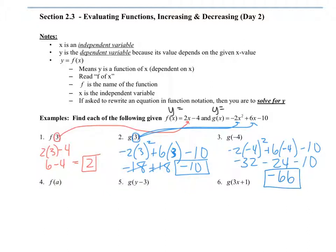It gets a little harder. If you understand problems 1, 2, and 3, then I can give you any number, letter, or combination — a binomial or trinomial — to plug in for X. All you're doing is plugging in whatever's in the parentheses for the X. In this case, instead of writing X, I'm writing a. Just like I did with a number, this time it's a letter a, but I'm still just plugging in a for X. There's nothing to do except write 2a minus 4.